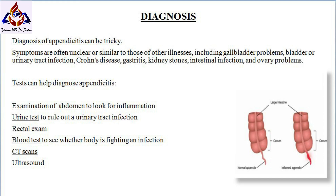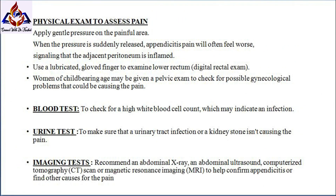These steps can help diagnose appendicitis: examination of the abdomen to look for inflammation; a urine test to rule out a urinary tract infection; a rectal exam; and a blood test to see whether the body is fighting an infection.